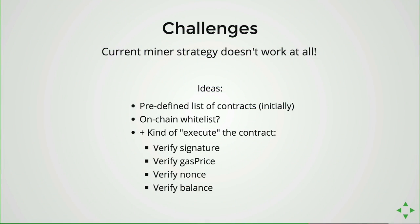The challenge is that the current miner strategy doesn't work at all under account abstraction, because we don't have any of the things that are crucial to maintaining the transaction queue in the network. Initially, most probably only some whitelisted contracts will be allowed to receive these zero-gas-price transactions introduced in Metropolis, hardcoded in the clients. Perhaps we can move to an on-chain whitelist in the future. Miners will need to go into the data field, extract the signature that is actually in there, and verify it to maintain a valid queue.